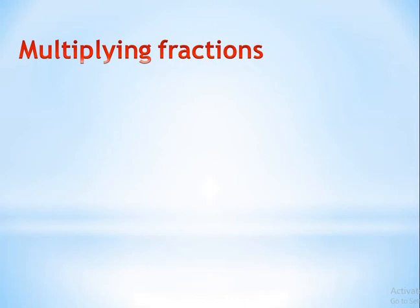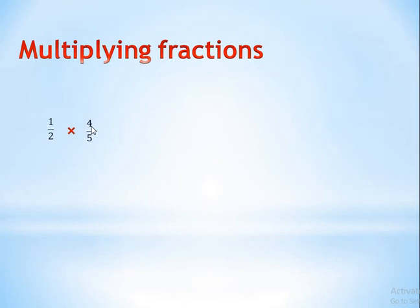In multiplying fractions, if I have a number like one-half times four over five — first fraction and second fraction — look at the numerator and denominator. Do we have any number in the denominator that can be divisible by any number in the numerator? Yes, we can simplify. We can simplify 2 with 4 because both of them are in the 2 times table. So let's simplify 2 and 4 by dividing both of them by 2.